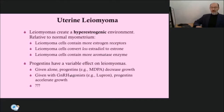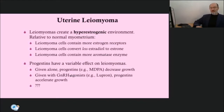Leiomyomas themselves create a hyperestrogenic environment, which appears requisite for their growth and maintenance. First, compared with normal myometrium, leiomyoma cells contain a greater density of estrogen receptors, which results in greater estradiol binding. Second, these tumors convert less estradiol to the weaker estrone. A third mechanism involves higher levels of cytochrome P450 aromatase in leiomyomas compared with normal myocytes. This specific enzyme catalyzes the conversion of androgens to estrogens.